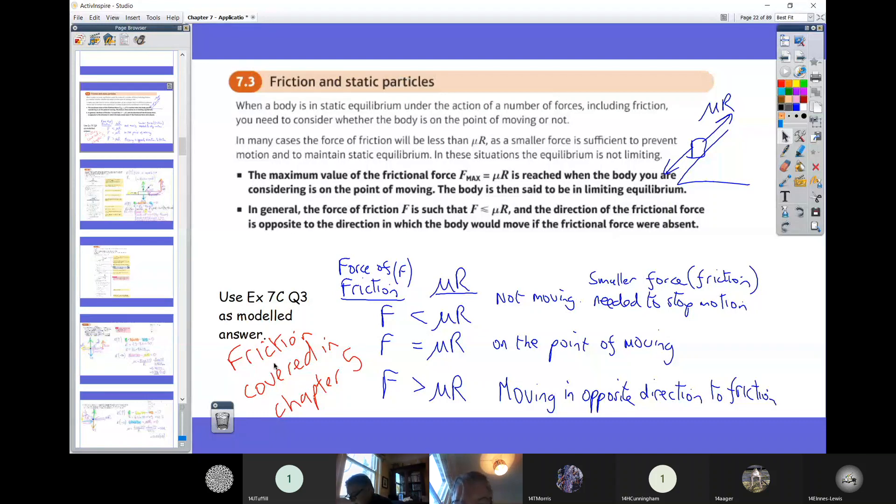As I said, friction equals mu times R, where mu is the level of roughness of the surface and R is the normal reaction. If you remember, the friction only presents itself as much as it needs to. So as the force increases, you'll get up to the point where the friction is at its maximum point—that's when it's on the point of moving. Once the friction goes over that F max, that's when it actually starts moving in the opposite direction.